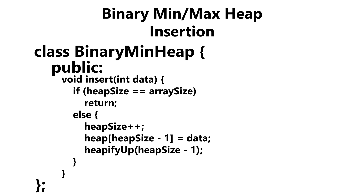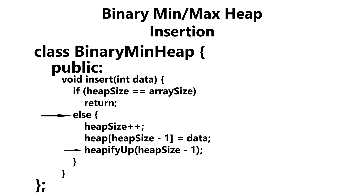Our insert method gets passed in the data we want to insert. We first check to see if we have enough space to insert, and if we don't, we just return. If we reach our else statement, that means we can insert. So the first thing we do is increment our heap size since we're inserting data. Remember, we always insert data within our heap from top to bottom, left to right — it has to be a complete tree. So we insert the data at the last available position, and once we do that, we call our heapify up method passing in the position of the data we just inserted.